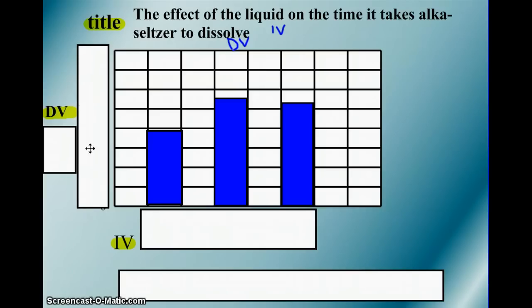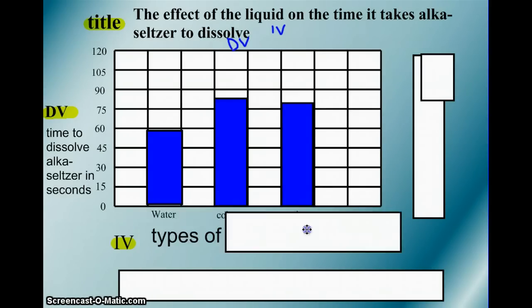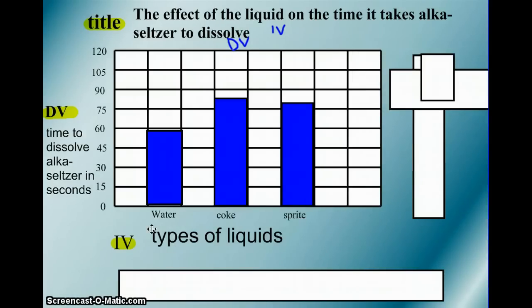So, we label our dependent variable on that y-axis and we have consistent spacing in between the numbers, and in this case we're going up by 15. So, we need to make sure that we're going up by 15 each time. And, we have our label. The time to dissolve Alka-Seltzer in seconds. That's our label. And, I've labeled units which is seconds. Here's the label for the x-axis, the independent variable. We have types of liquids and then we have each type. It's very important to have both of these. You need a label for each bar and you need a label for the x-axis.